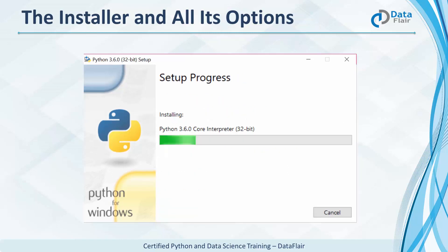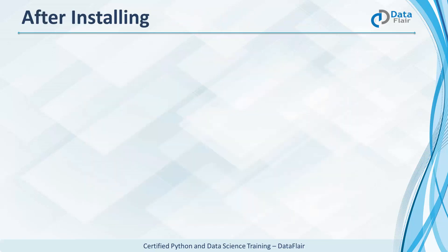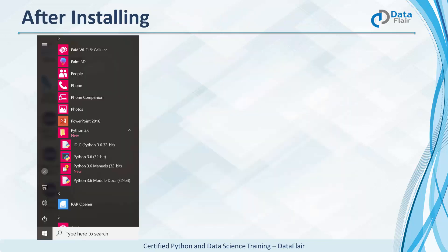Now as it's installing, it gives you a progress bar and downloads the necessary files onto your machine. We're done installing. Now you can find it in your start menu.